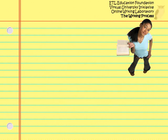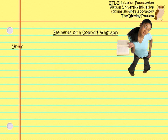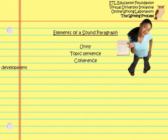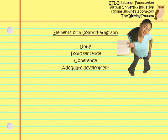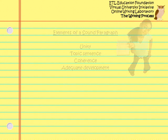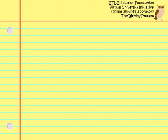So the elements of a sound paragraph include the presence of unity, a topic sentence, coherence, and adequate development. Let's take a look at these elements in action. Remember that paper on professional sports' impact on American society? Here's a potential paragraph within the body of that paper.